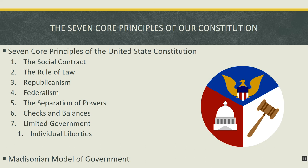Just so there's no confusion, I want to clarify the term Madisonian model of government. Sometimes when people list the core principles of the Constitution, instead of listing separation of powers and checks and balances as separate principles five and six, they merge them together and call it the Madisonian model of government. We call it this because these principles are strongly embedded in the main body of the Constitution, which was greatly influenced by James Madison, and because at the Constitutional Convention Madison was one of the most vociferous advocates for their inclusion.